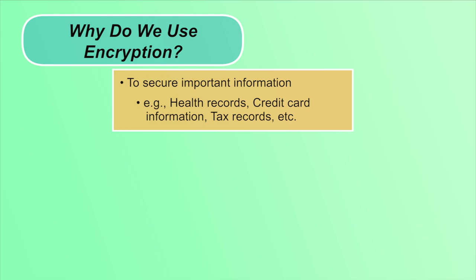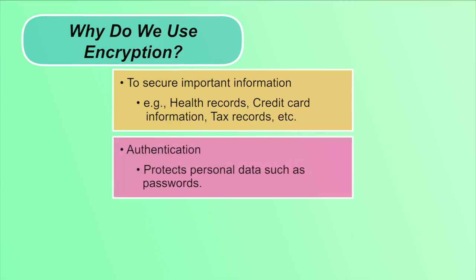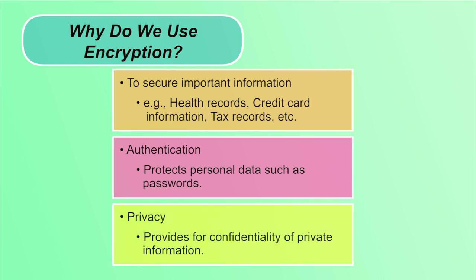If this information is not encrypted and easily available, anyone can misuse our personal information. For example, if our debit card information is stored as plain text, an attacker can easily get our debit card number, name on card, and so on. Encryption is also used to protect credentials used for authentication — our usernames and passwords are stored in encrypted form. It maintains privacy by providing confidentiality to our private information.